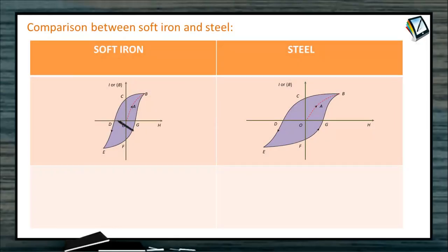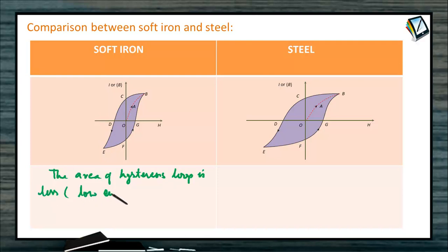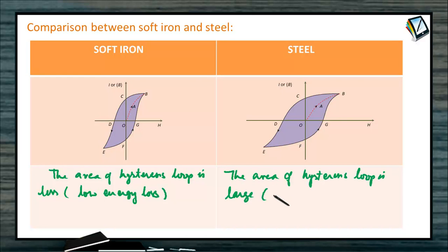The area of the hysteresis loop for steel is large, resulting in high energy loss. In the case of soft iron, the area of the hysteresis loop is less, so we have low energy loss. Soft iron has less retentivity and coercive force, whereas steel has more retentivity and more coercive force.